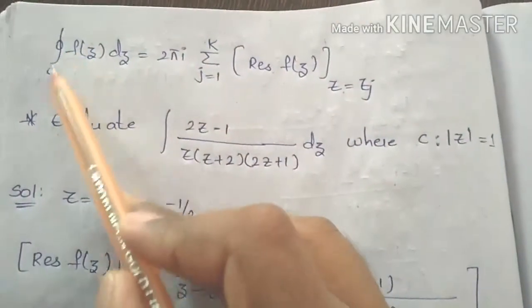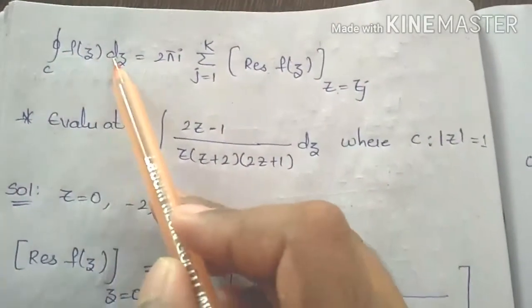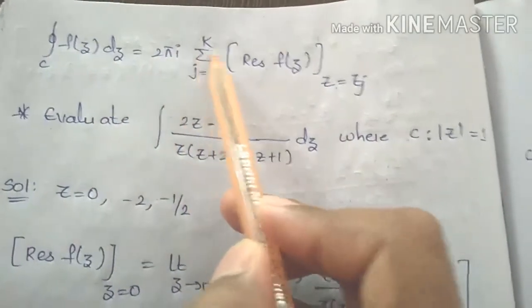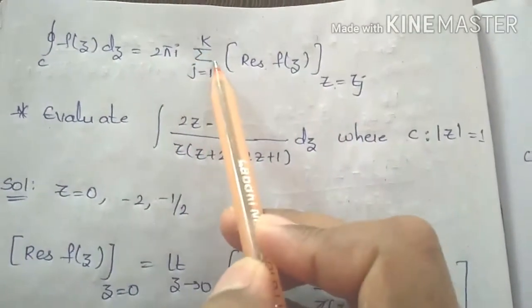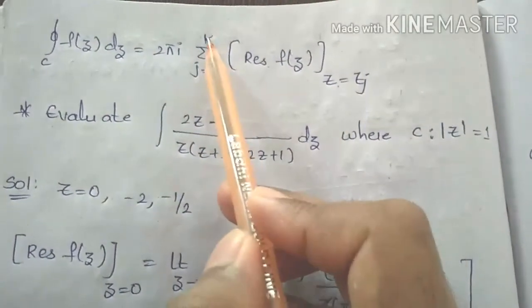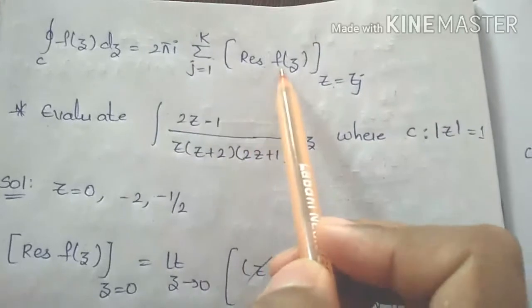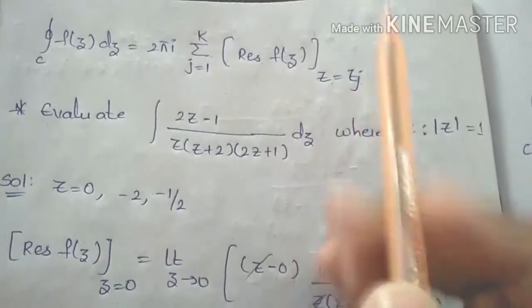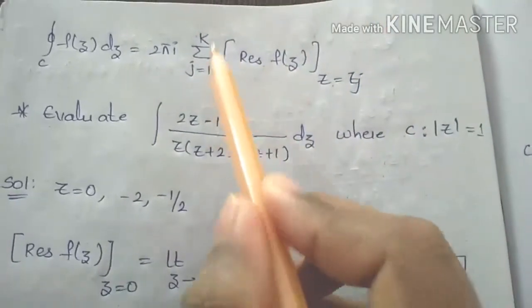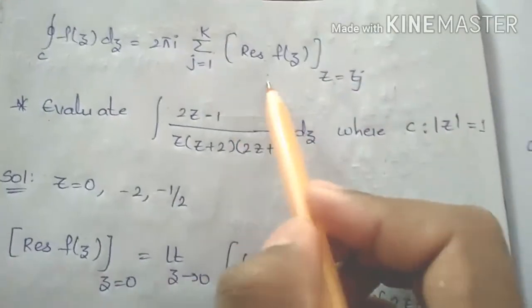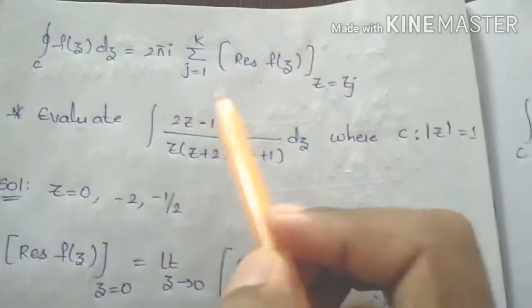The closed integral of f(z) dz equals 2πi times the summation from j equals 1 to k of the residue of f(z) at z equals z_j.